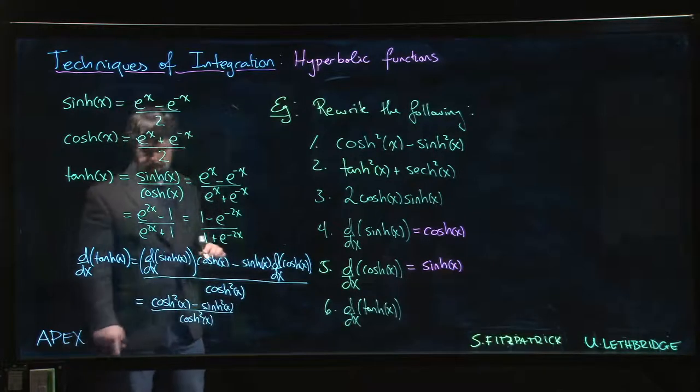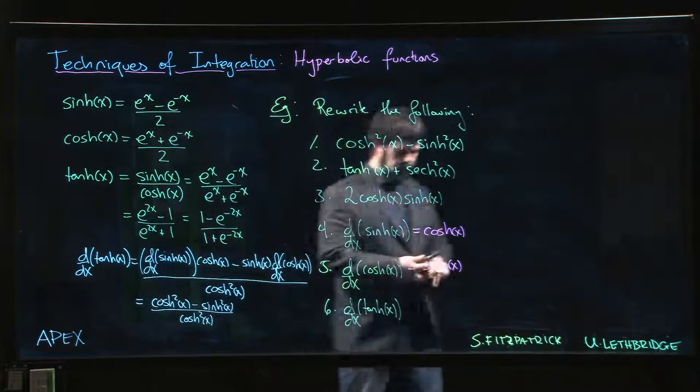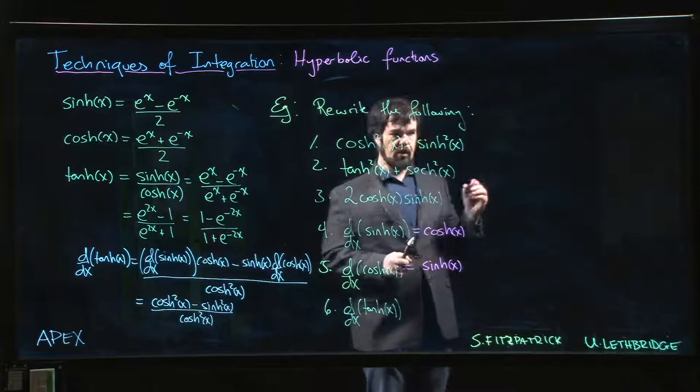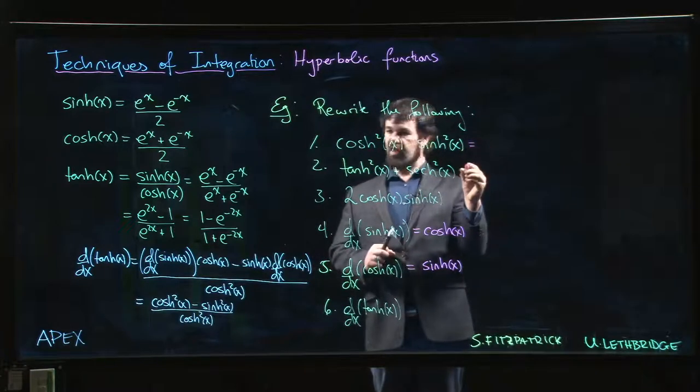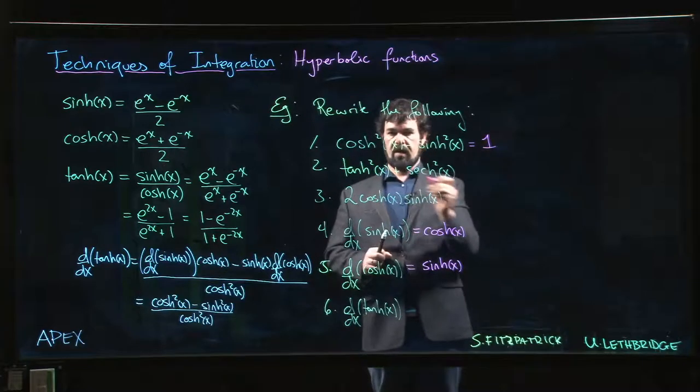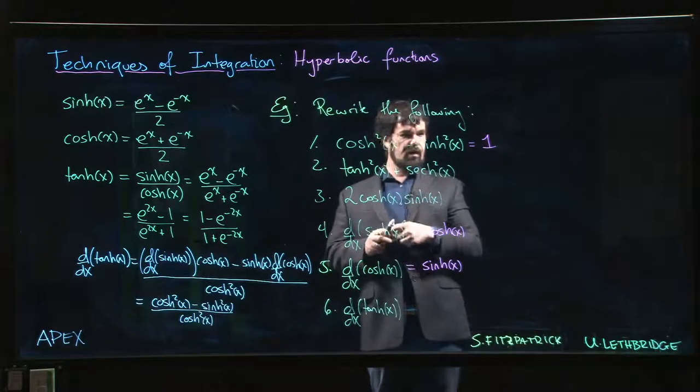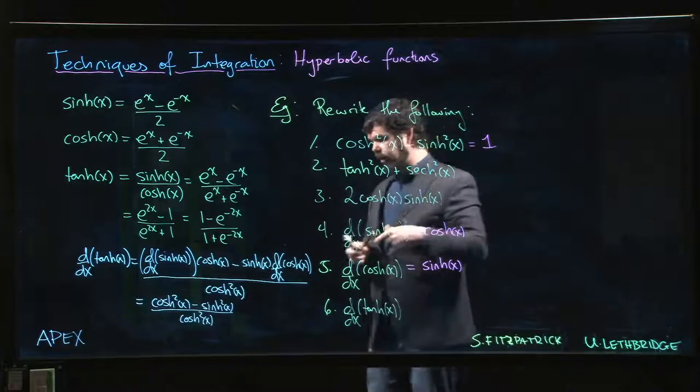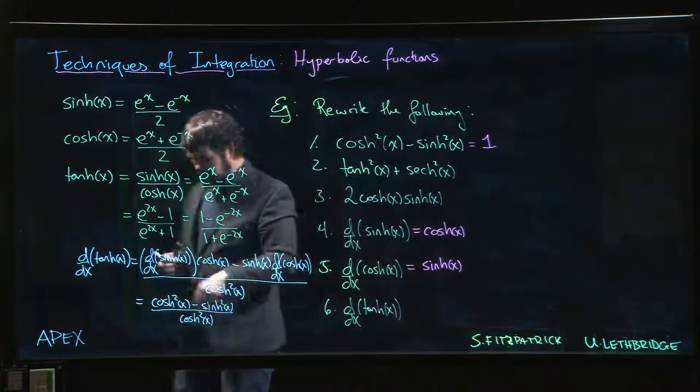Okay, but one of the other things that we already determined way back when we first were exploring these definitions and where these come from - we said this is equal to one. It satisfies the equation for the unit hyperbola. We have this identity, so the numerator is one, we get one over